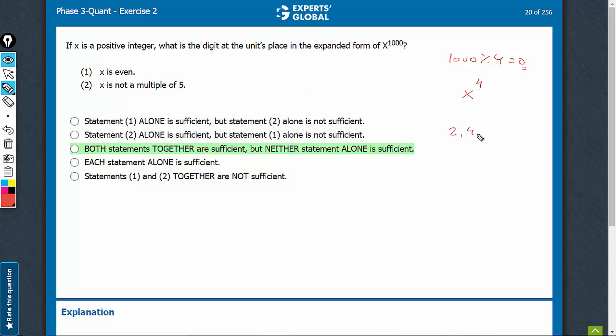X is even. So for 2, 4, 6, and 8 as the last digits, the value is going to be 6. But for 0 as the last digit, an even number can very well end with 0. For such a value, the last digit would be 0. Two different answers are possible, so statement 1 is not sufficient.